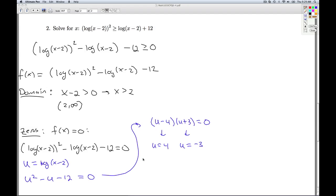I bring these back to logarithms. And I get log of x minus two is four. Or the log of x minus two is negative three. Remember, log by itself is really log base ten. So I can rewrite this as an exponential. Ten to the fourth power is x minus two. Or ten to the negative third power is x minus two.